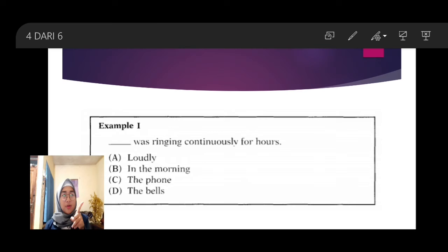In this example, you should notice immediately that there is a verb, was ringing, but there is no subject. So, answer C is the best answer because it is a singular subject that agrees with the singular verb was ringing.